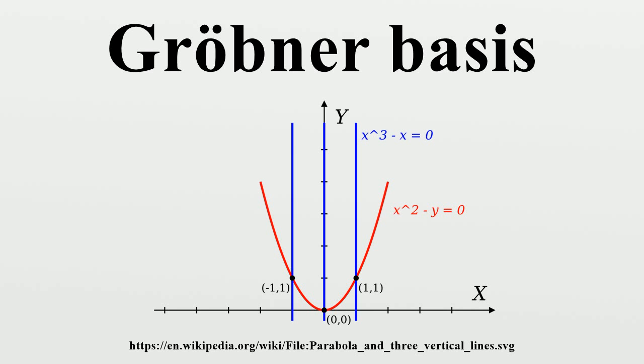Formal definition: A Gröbner basis G of an ideal I in a polynomial ring R over a field is a generating set of I characterized by any one of the following properties, stated relatively to some monomial order. The ideal given by the leading terms of polynomials in I is itself generated by the leading terms of the basis G. The leading term of any polynomial in I is divisible by the leading term of some polynomial in the basis G.